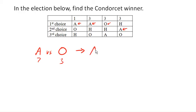If we look at A versus H, then let's see. A is preferred, A is preferred, H is preferred, H is preferred. So four people prefer A, and six people prefer H. And so H would be the preferred choice there.